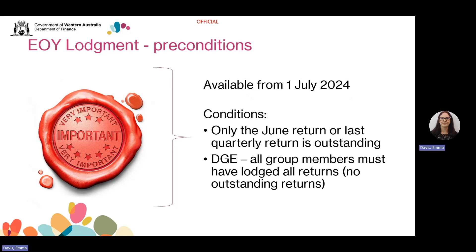The function to access your End of Year Lodgement is available from 1 July 2024. You can also access the Australian taxable wages and estimated taxable wages options on the left hand side menu. You can only access the End of Year Lodgement function if the June return is your only outstanding return for this year. So if you're a monthly lodger, June is your only outstanding return, or this is your last quarterly return if you lodge quarterly. If you are the designated group employer, all group members must have lodged or modified their returns.